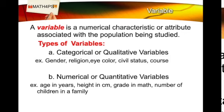The next step in research is the identification of variables. A variable is a numerical characteristic or attribute associated with the population being studied. There are two main types: categorical or qualitative variables — such as gender, religion, eye color, civil status, and course — which can assume qualitative values only; and numerical or quantitative variables — such as age in years, height in centimeters, grade in math, or the number of children in a family — which can assume numerical values only.